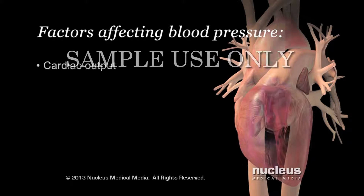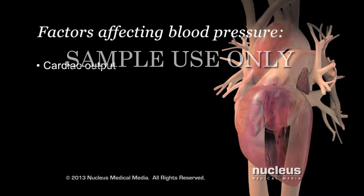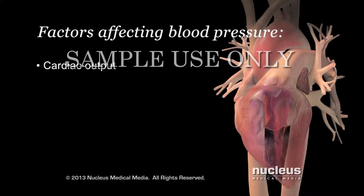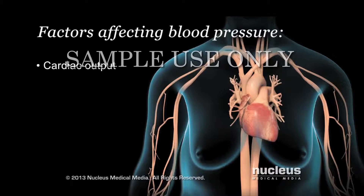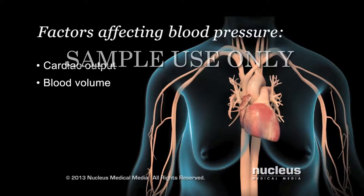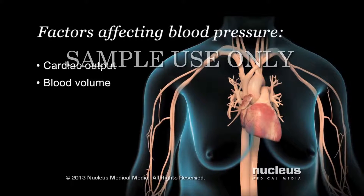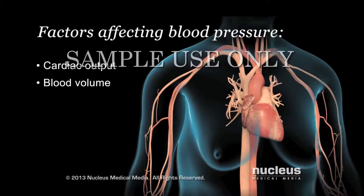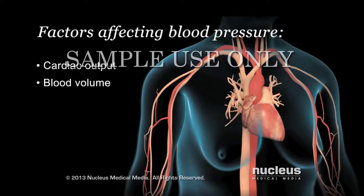The first is cardiac output, or the amount of blood your ventricles push out of your heart each minute. Your blood pressure goes up as cardiac output increases. The second factor is blood volume, or the total amount of blood in your body. Blood pressure also goes up as blood volume increases.